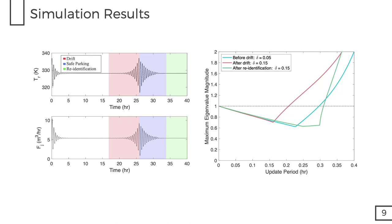After performing a stability analysis, the system is initially run with a stabilizing update period. This can be seen in the state profiles on the left over here. After some time, a drift is introduced, and the states start to diverge. Safe parking protocol takes place, and the system is stabilized while data is collected, and then re-identification takes place, and the update period is then increased again, and the system remains stable throughout the rest of the operation. The figure on the right shows the maximum eigenvalue magnitudes from the stability analysis for all three cases. Thank you for your time.